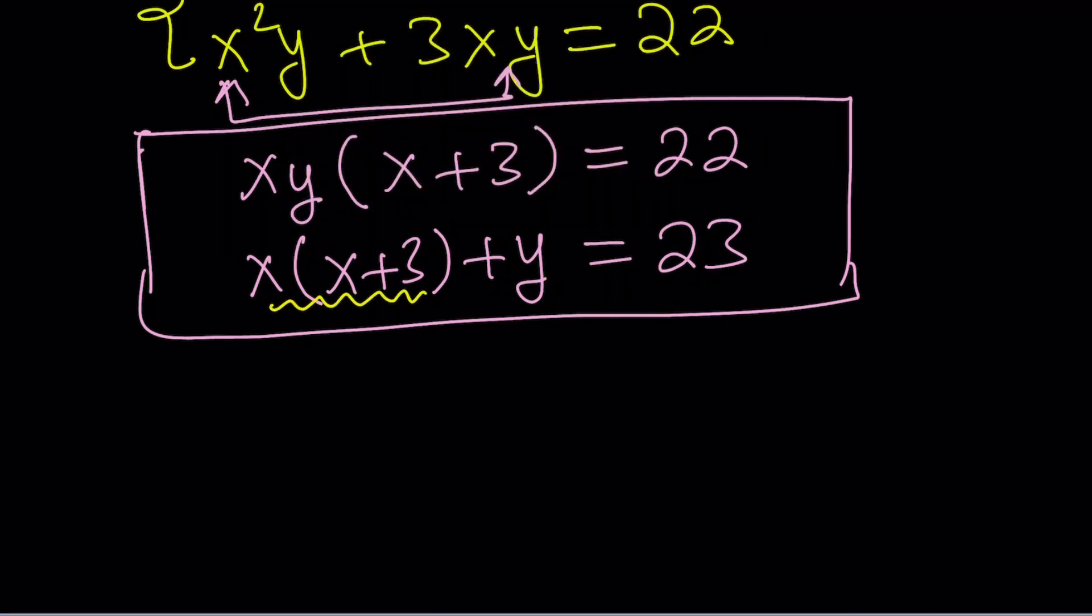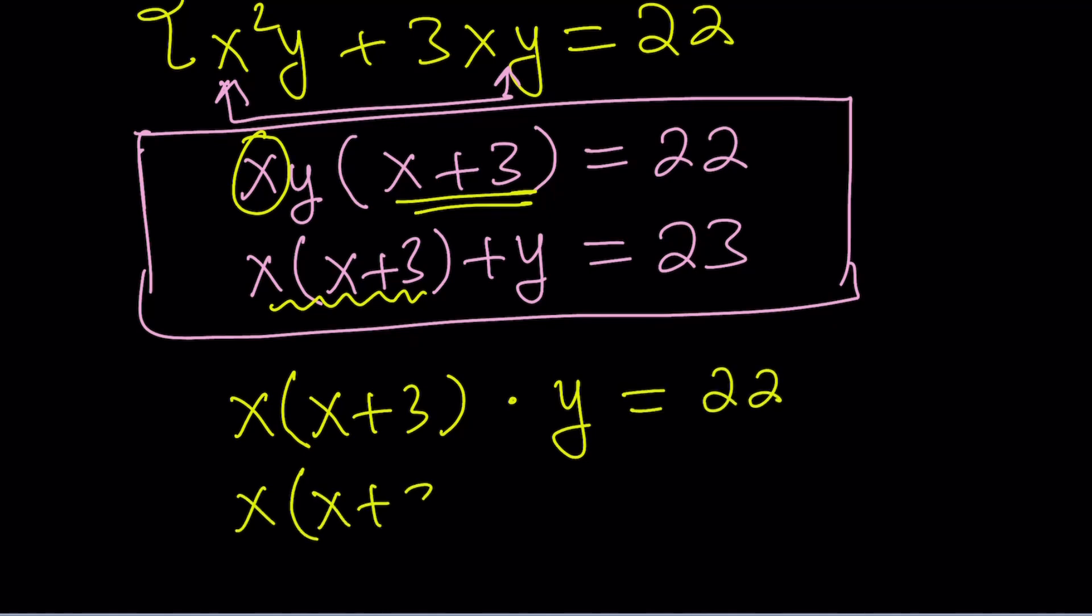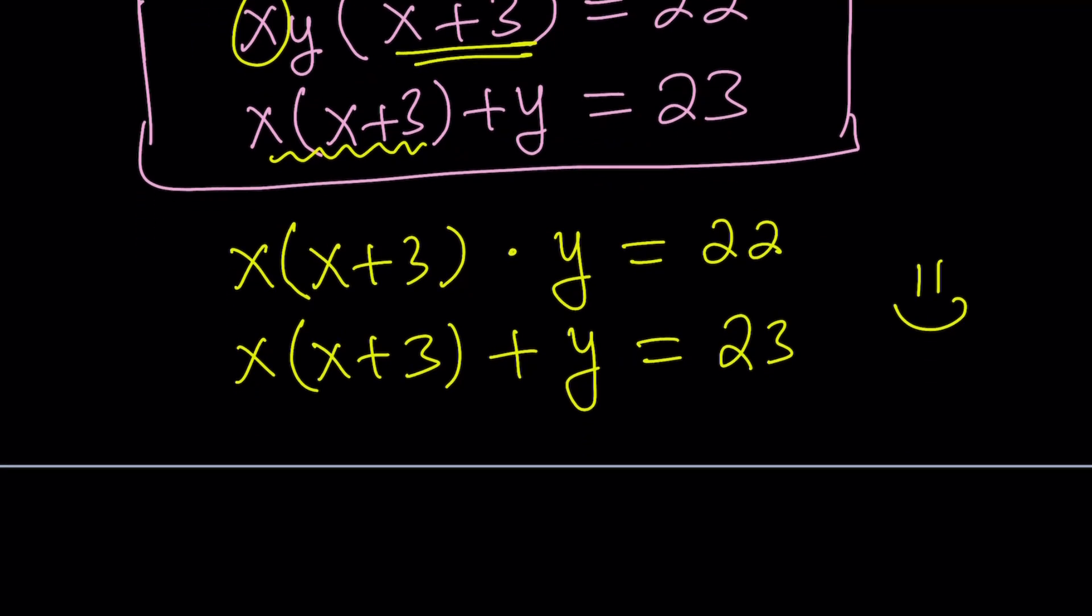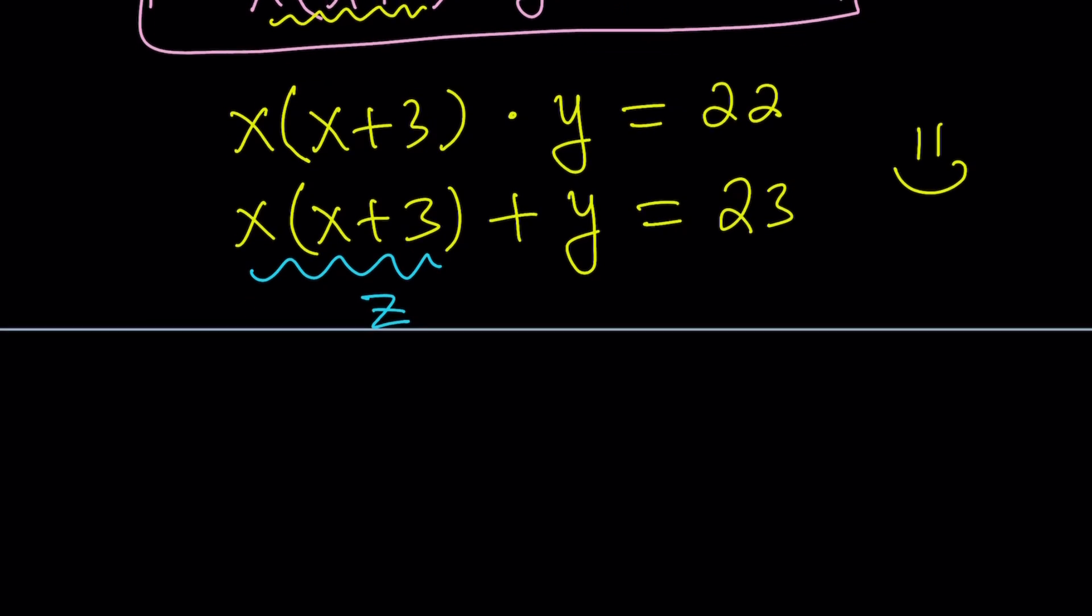Notice that x times x plus 3 is kind of like together. Then they make up an entity. And then y is being added. So if I put these two together, then I'll be getting the same thing. So let me rewrite my equation that way. x times x plus 3 times y equals 22. x times x plus 3 plus y is 23. Hopefully you see what I see. And if you do, here's what I'm talking about. Let's call this x times x plus 3 thing another variable like z. And we can stick with the y. Because it's already a good variable.